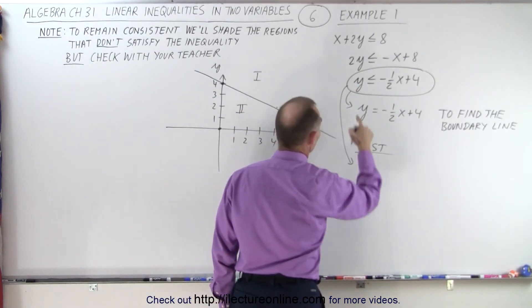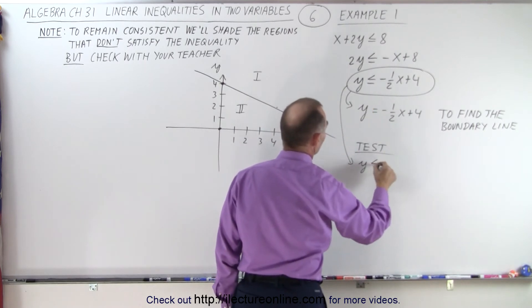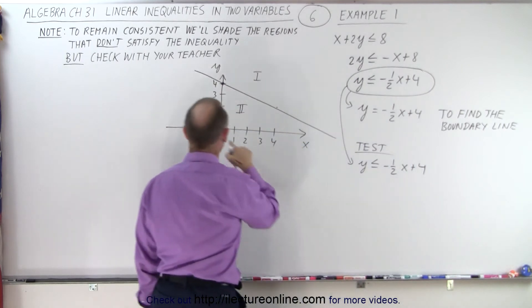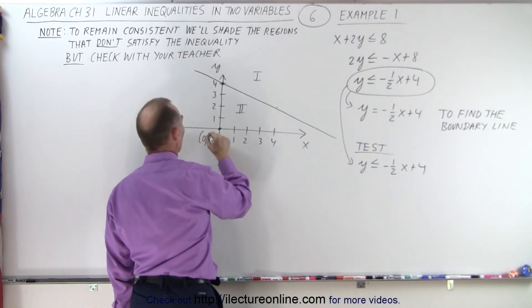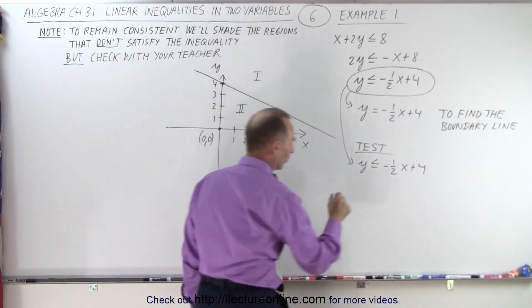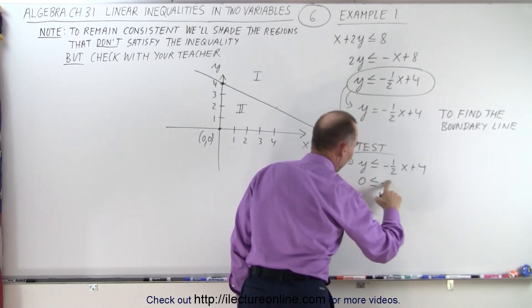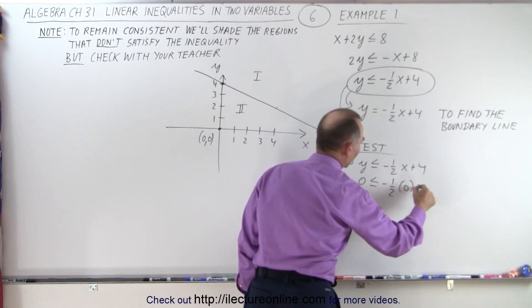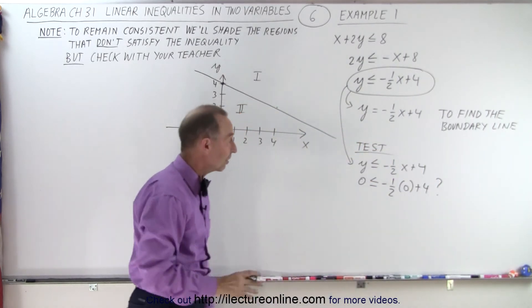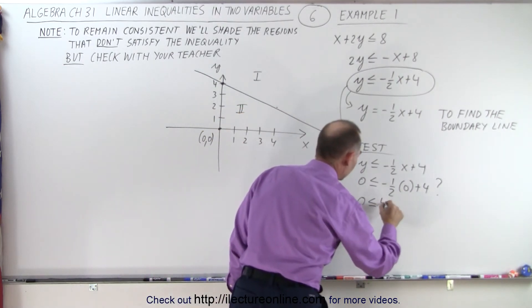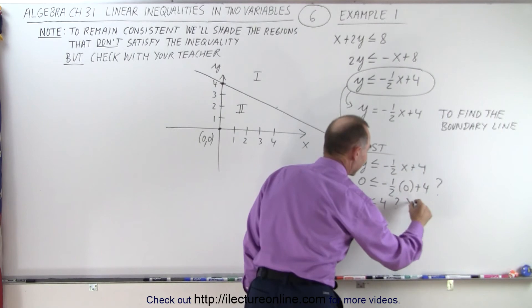Here we have y ≤ -1/2x + 4, and we're going to plug in the point (0, 0) out of region number 2. So 0 ≤ -1/2(0) + 4 question mark, because we're checking to see if that's correct. Simplifying that, we get 0 ≤ 4 question mark. And the answer is yes.